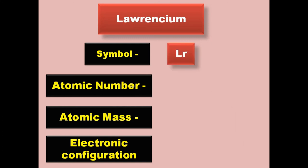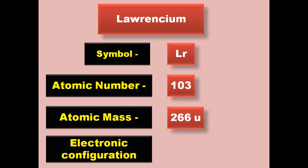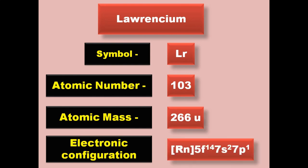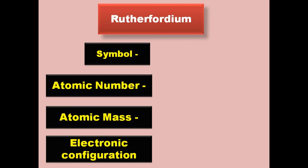Lawrencium has symbol Lr, atomic number 103, atomic mass 266, electronic configuration [Rn] 5f14 7s2 7p1. Lawrencium is an actinide and exists in solid form at room temperature.